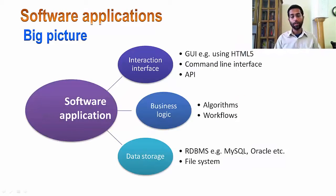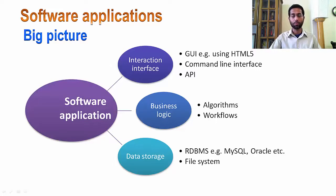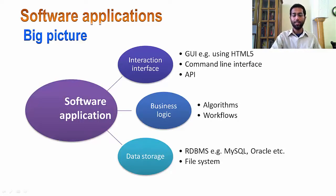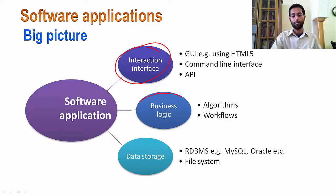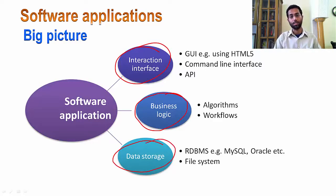Now, if you want to make use of that hardware — the raw computer — you have to install some useful applications on top of that raw machine. Most data-driven applications consist of three elements: one is an interaction interface, another is called business logic, and the third one is known as a data storage element.